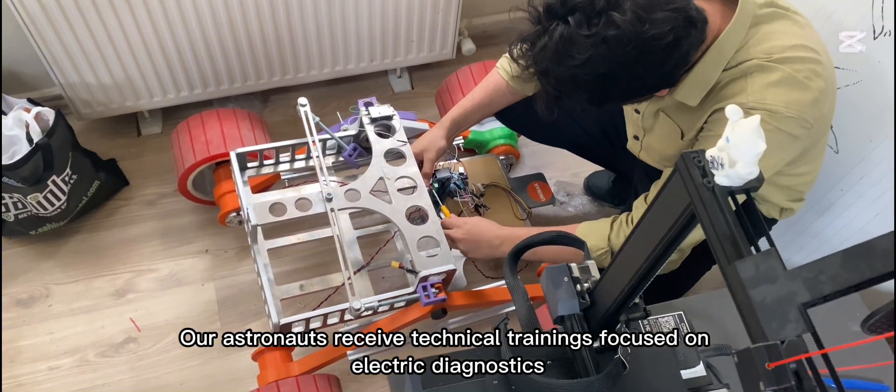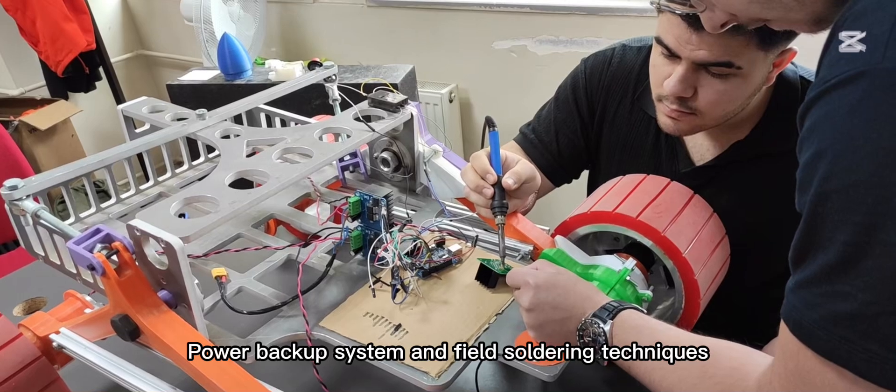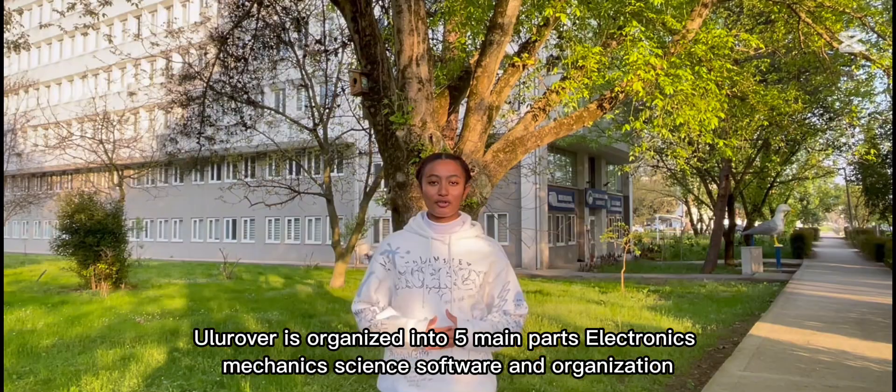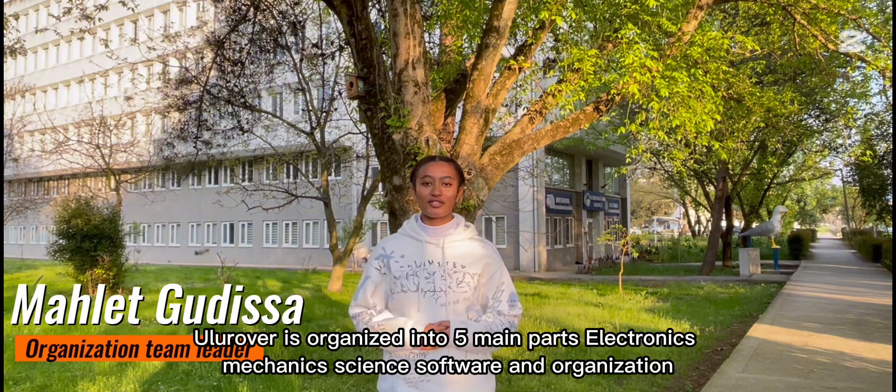Our astronauts receive technical trainings focused on electric diagnostics, power backup systems and field sorting techniques. The rover is organized into five main departments: electronics, mechanics, science, software and organization.